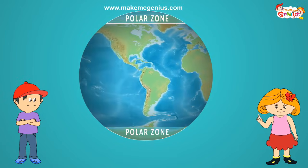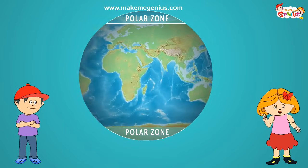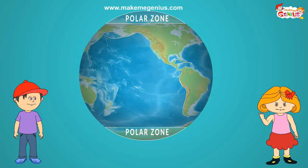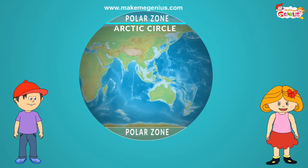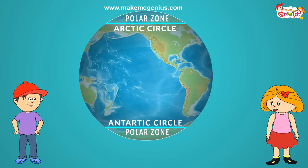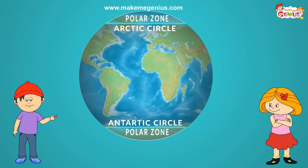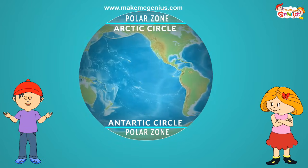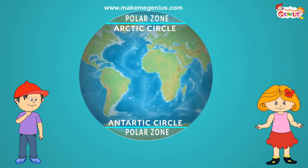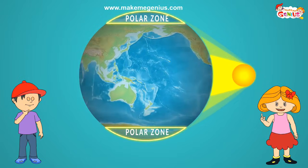Now our friend the polar bear wants to see his home, the polar zone. This zone is known as the polar zone as it lies close to the poles. There are two polar zones, one near the North Pole above the Arctic Circle, and another one surrounding the South Pole above the Antarctic Circle. And like our guest the polar bear told us, it is very cold here throughout the year. This is because near the polar regions, the rays of the sun are very slanted.